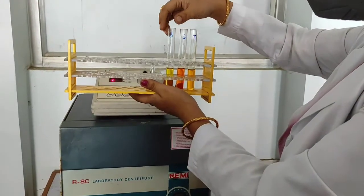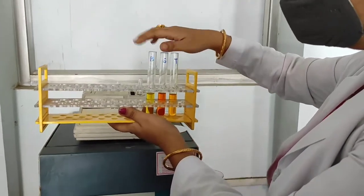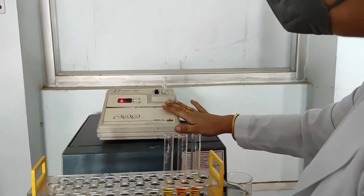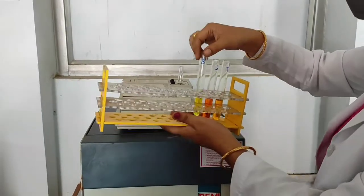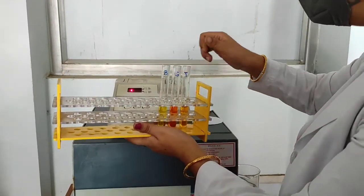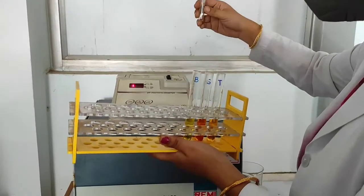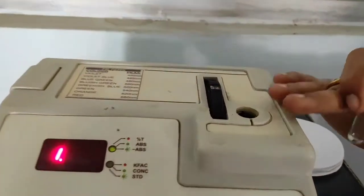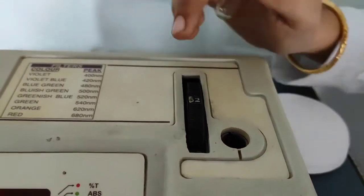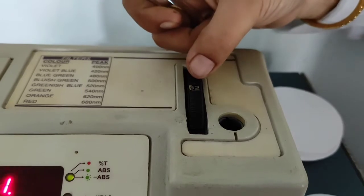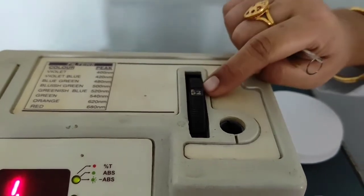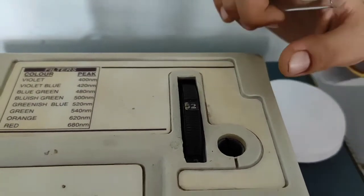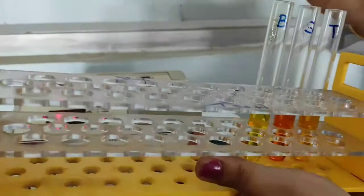These are the 3 test tubes. After keeping the test tubes for 10 minutes, I'll be measuring the optical density with this colorimeter. This is the blank, this is the standard, this is the test. I'll be using cuvettes. And this is the colorimeter. And the wavelength should be 520. This is 520. So, I'll be measuring the optical density of these 3 test tubes.